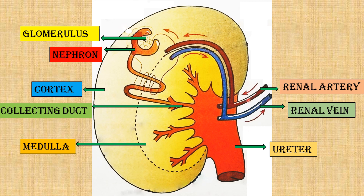To summarize: the cortex is the outer region of the kidney; the medulla is the inner region. The renal artery brings dirty blood to the kidney for filtration, and the renal vein carries the clean blood away. The nephron and glomerulus are both responsible for filtering the blood. The waste is collected in the collecting duct as urine, which then passes down into the ureter.